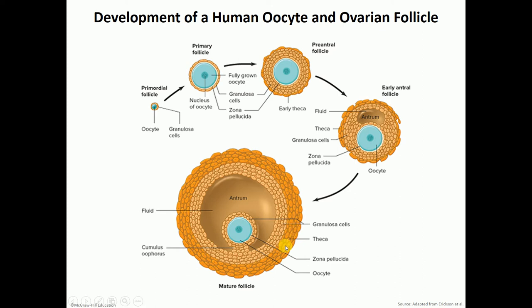The theca cells produce androgens. These androgens will diffuse into the granulosa cells that have aromatase enzyme, and that is going to change those androgens into estrogens.